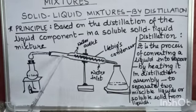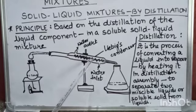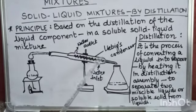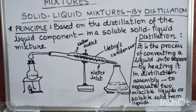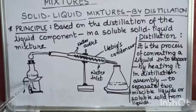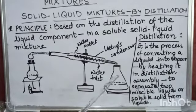In the condenser, the vapors cool down and change from vapor state into liquid state. They are then collected in another flask. This collected liquid is pure water. What is left behind in the distillation flask is the solid impurities in water. This is how the distillation process is carried out.